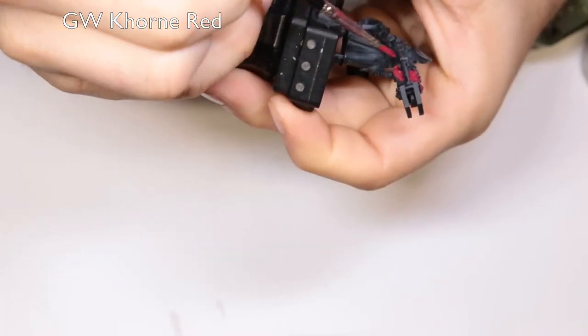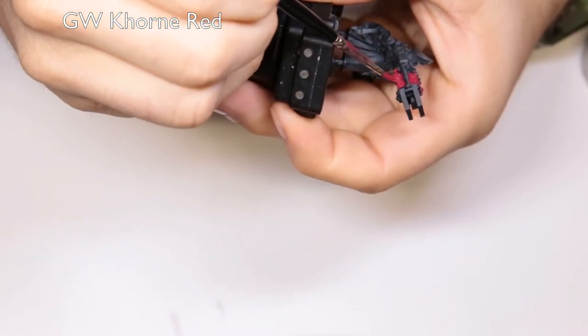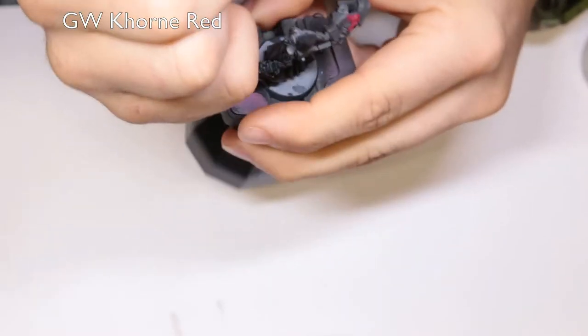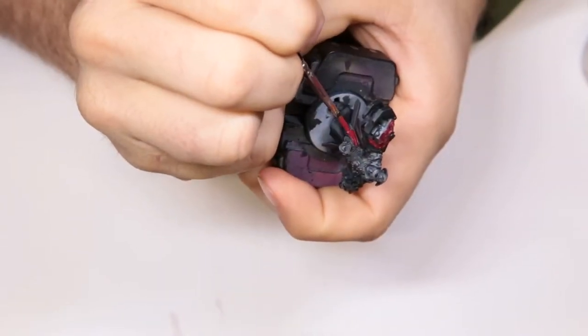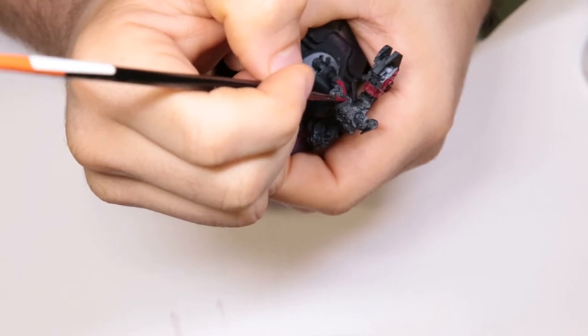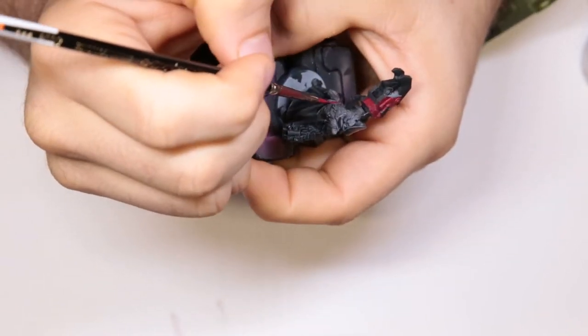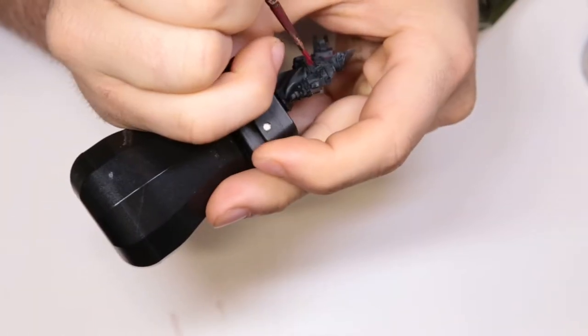His little power grabber thing being supposed to be red, being that it started with black, we've got to go with an intermediate color to get it to the red we want it to. So we're starting with Khorne Red. We're going to change it to Mephiston Red here in a second, but this is just to start getting these blacks onto the red spectrum.